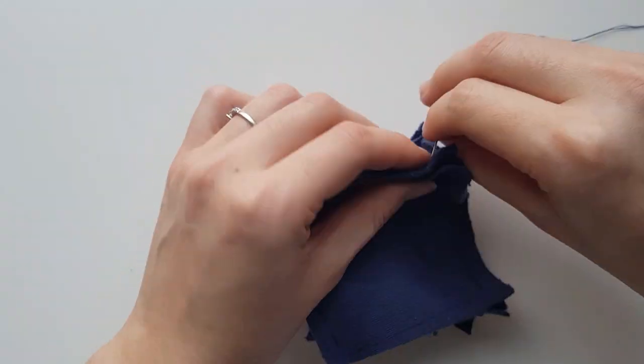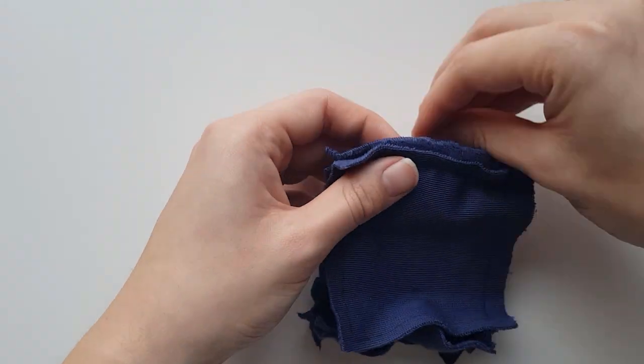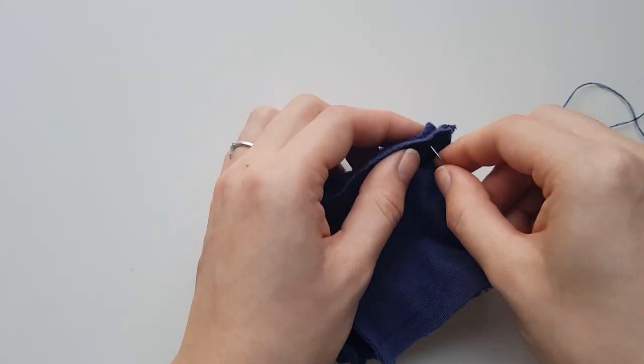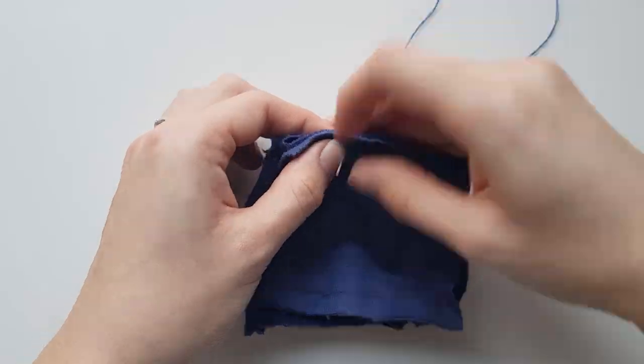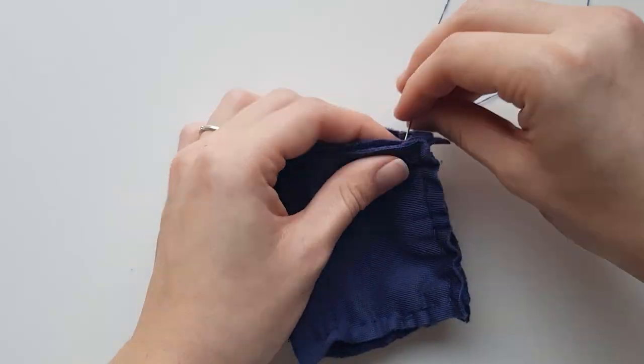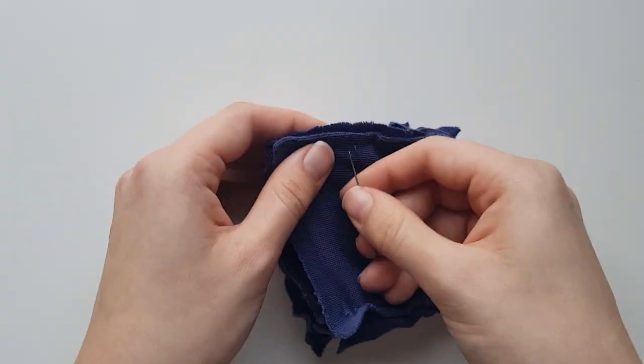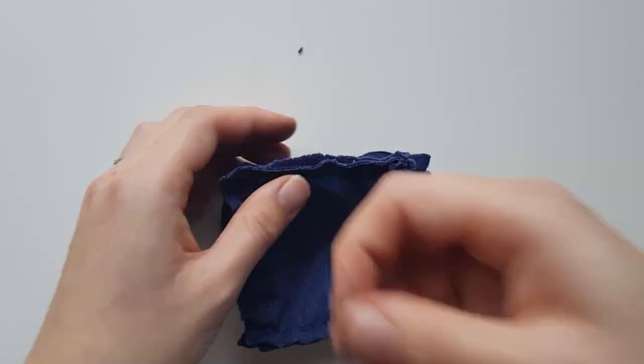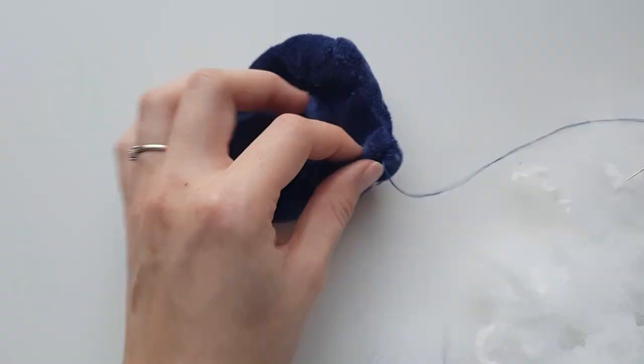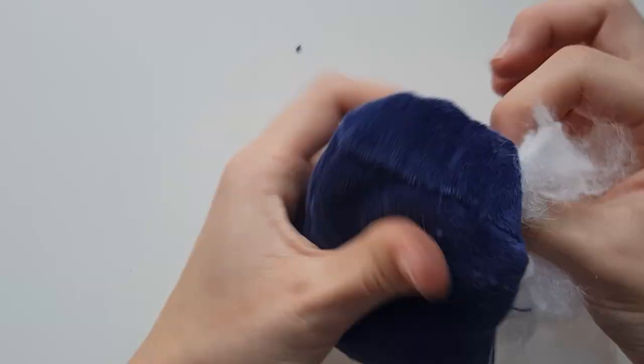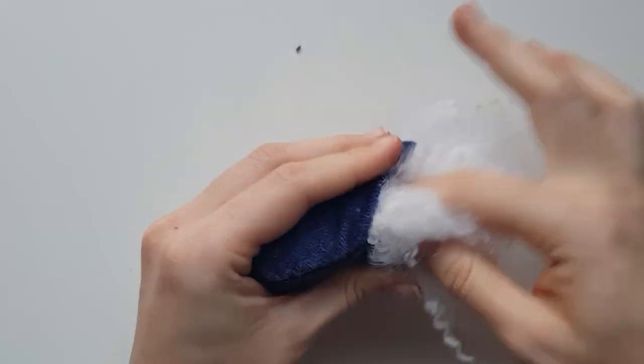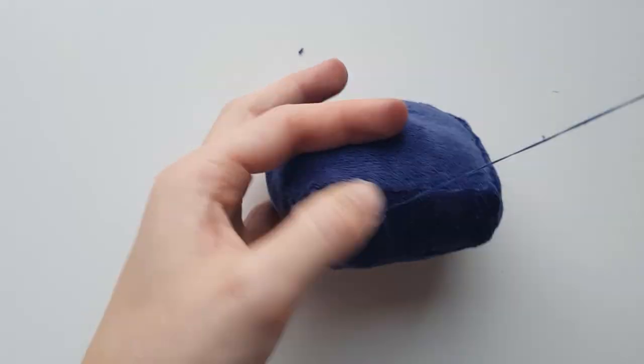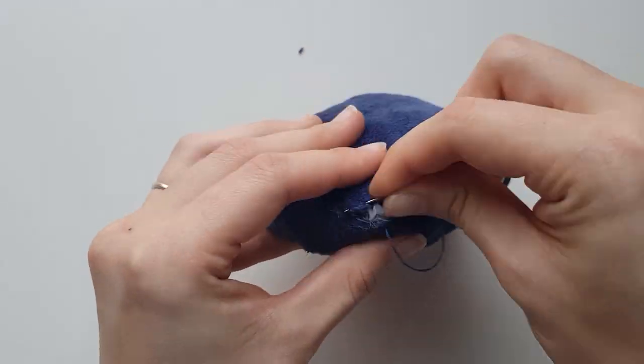Place the last main piece so it aligns with the remaining top open sides and begin sewing it on. Flip it upright when you've almost closed it off and stuff it. Close off the remaining open edge with an invisible stitch.